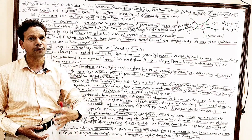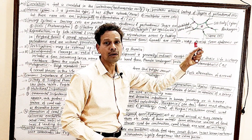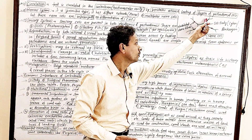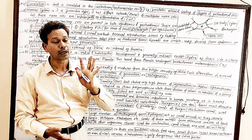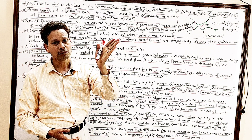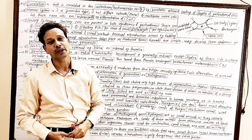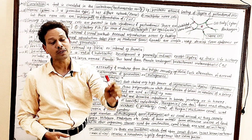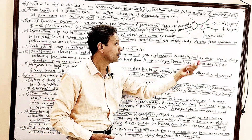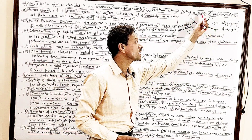The nervous system in cnidarians is simple and primitive type. It is diffused and plexiform. The nerve cells are multipolar because these nerve cells possess several nerve fibrils, and these nerve fibrils are non-myelinated. These multipolar nerve cells produce a network — plexiform — in the epidermis as well as gastrodermis, meaning in both layers of the body wall.